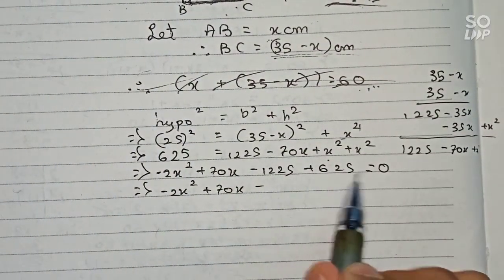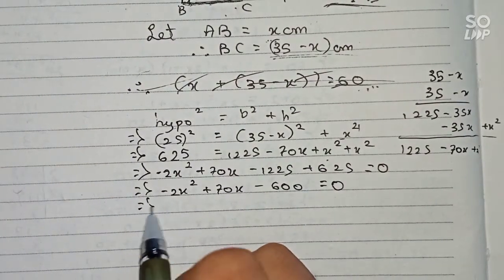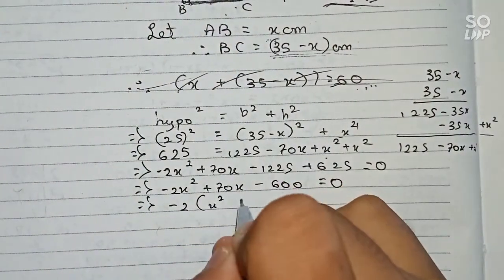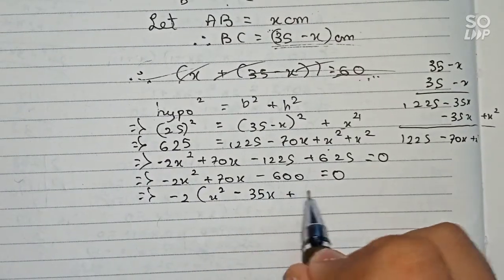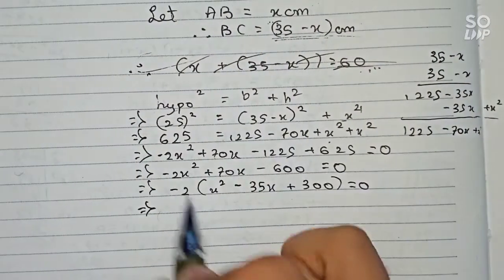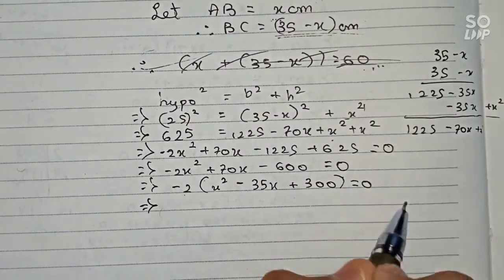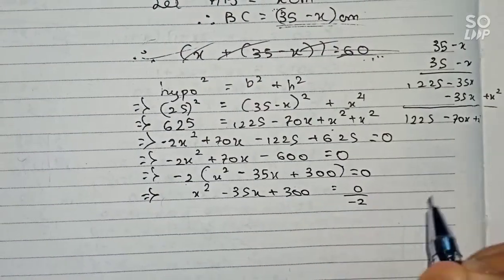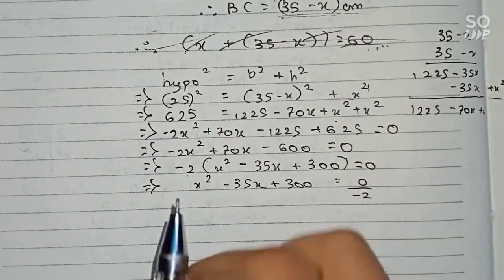Taking 2 as common and dividing through: 1225 minus 625 gives 600, so we have minus 2x squared plus 70x minus 600 equals 0. Dividing everything by minus 2, we get x squared minus 35x plus 300 equals 0, since 0 divided by any number is still 0.